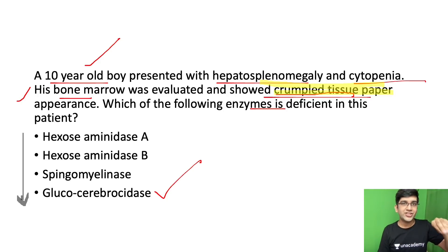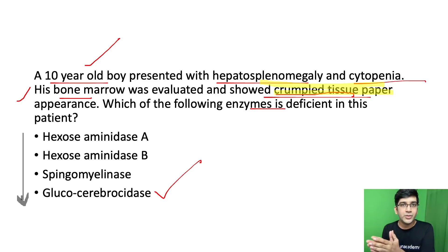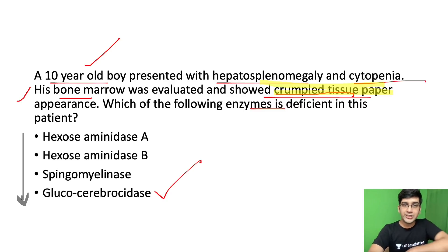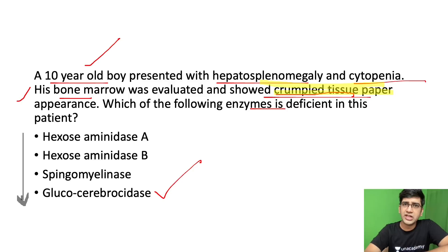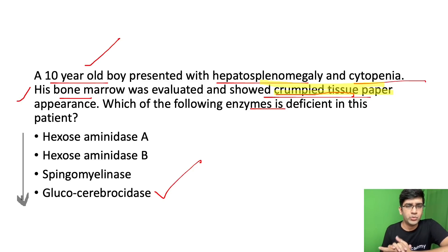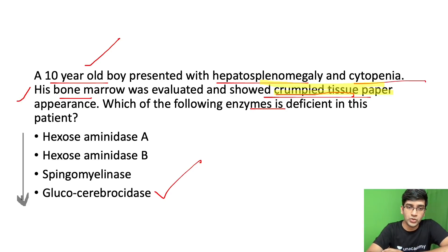If you have such integrated questions and your thought process is good, it's definitely going to help. We look at the crumpled tissue paper appearance, but also one more finding can be seen in bone marrow — Niemann-Pick's. Niemann-Pick and Gaucher's are both storage disorders and both can involve the bone marrow. These two are a bit more common, so I'll show the images of these two.